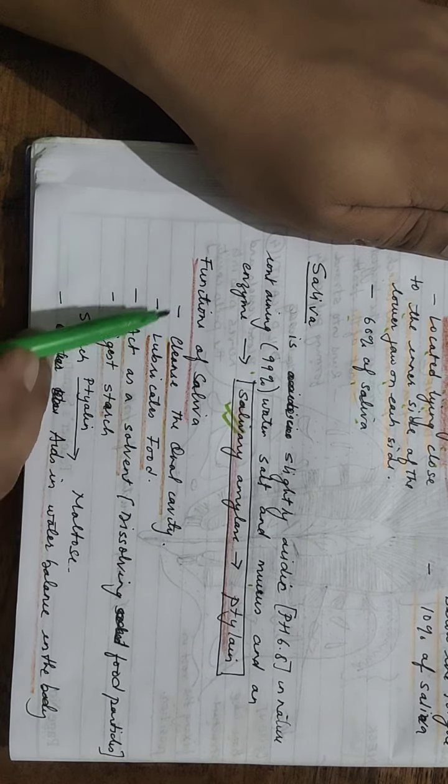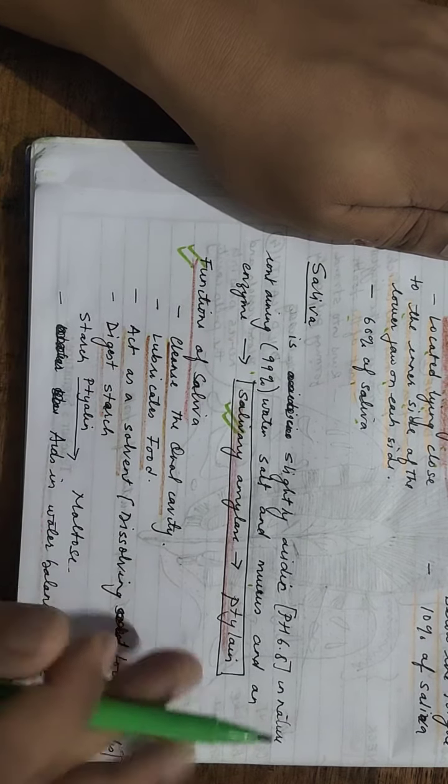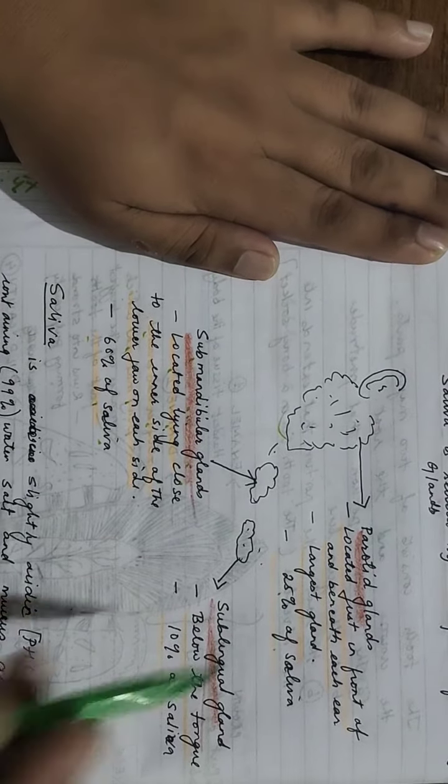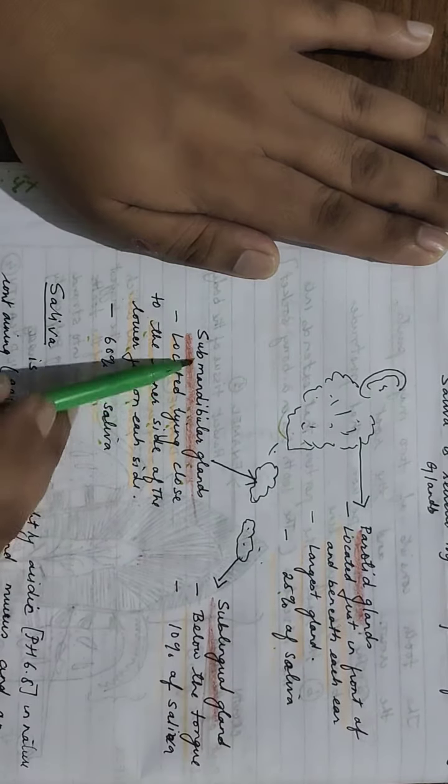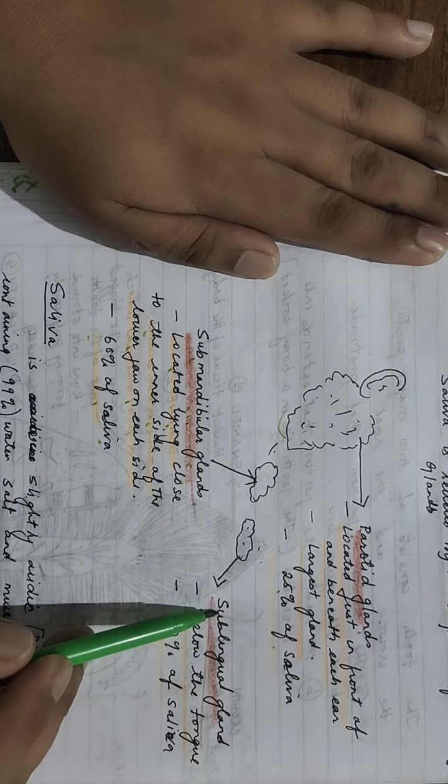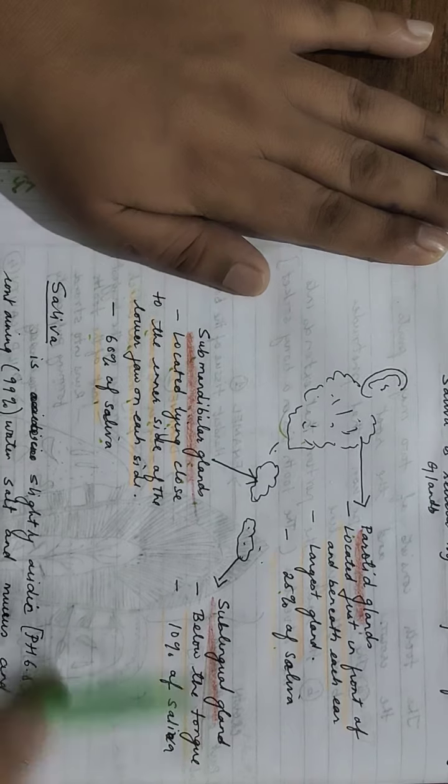The functions are very important. We have also learned about the three types of salivary glands: parotid gland, submandibular gland, and sublingual gland.